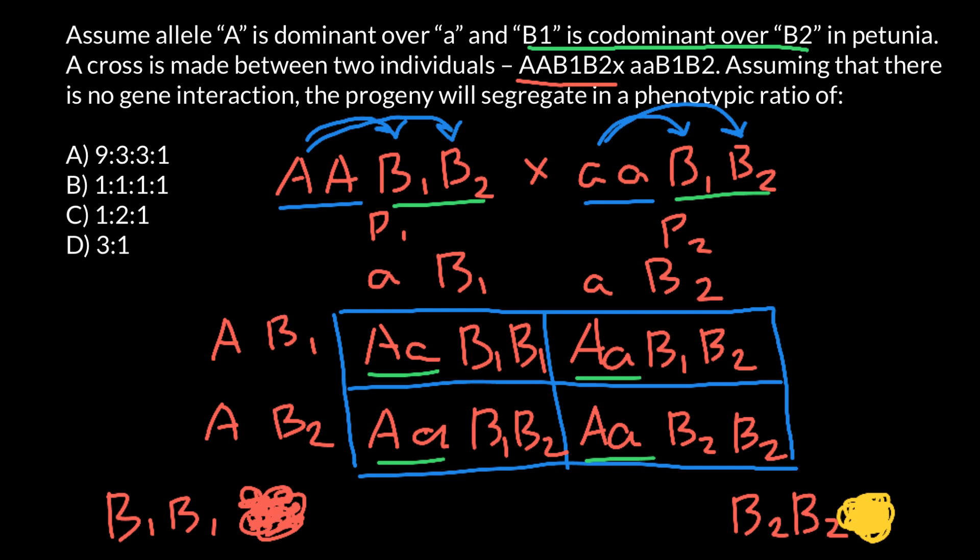But if genotype would be B1 and B2, because these two alleles are codominant, we would see manifestation of both colors in a flower. So we would see patches of red and also patches of yellow. This is going to be our flower that would manifest both colors. So now let's analyze what we see here.